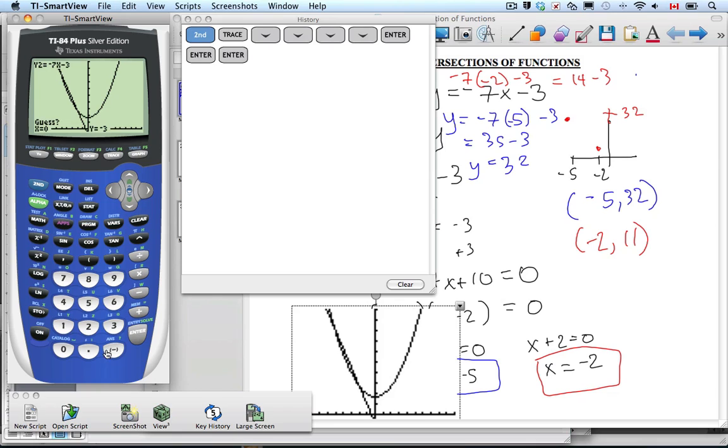Now it wants me to guess. Well, we already have our points, so let's guess with one of our points, negative 2. Negative 2 sounds like a good one. Yay! And indeed, I get 11.